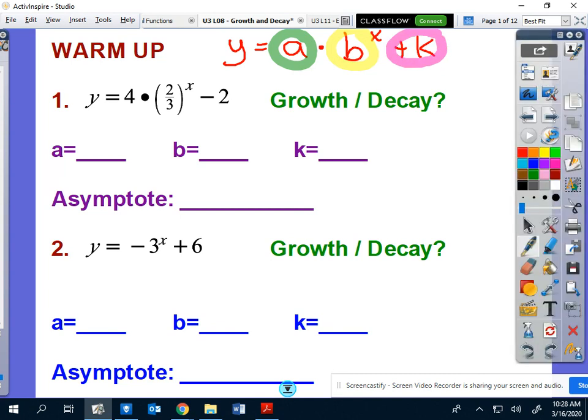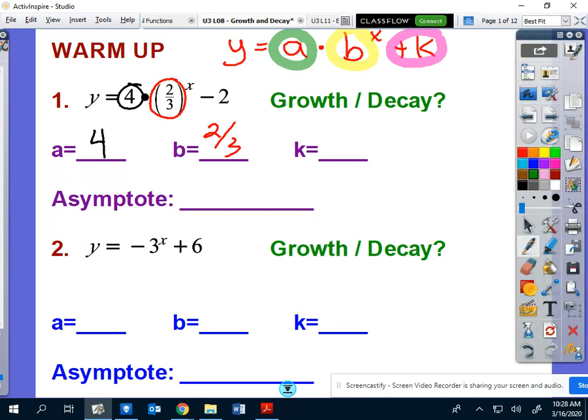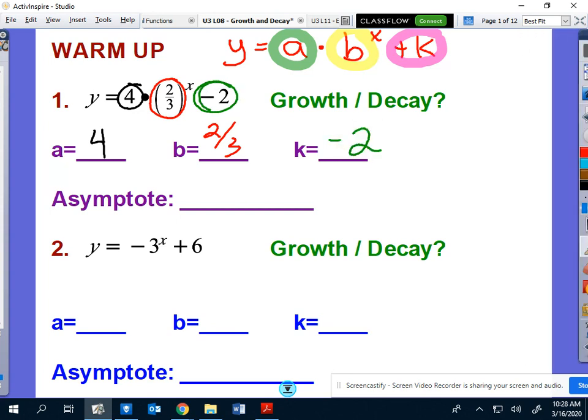In this first example, it should be pretty straightforward. Your a value has to be this four. So it leads with that positive four right there. Your b value is the two over three. Your b value is always the base that's being raised to the exponent, and your k value is the number that is being added or subtracted to the end.